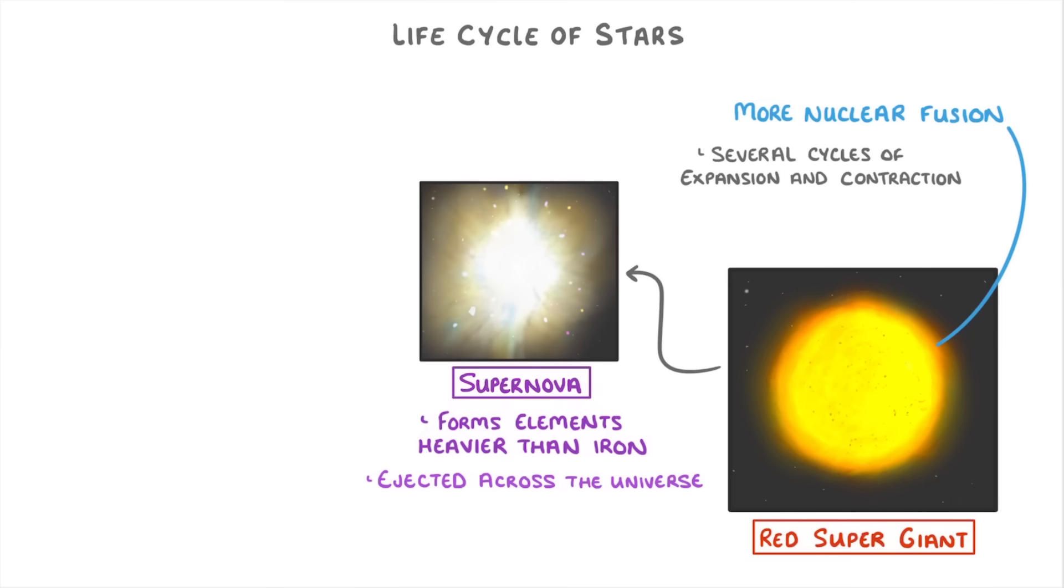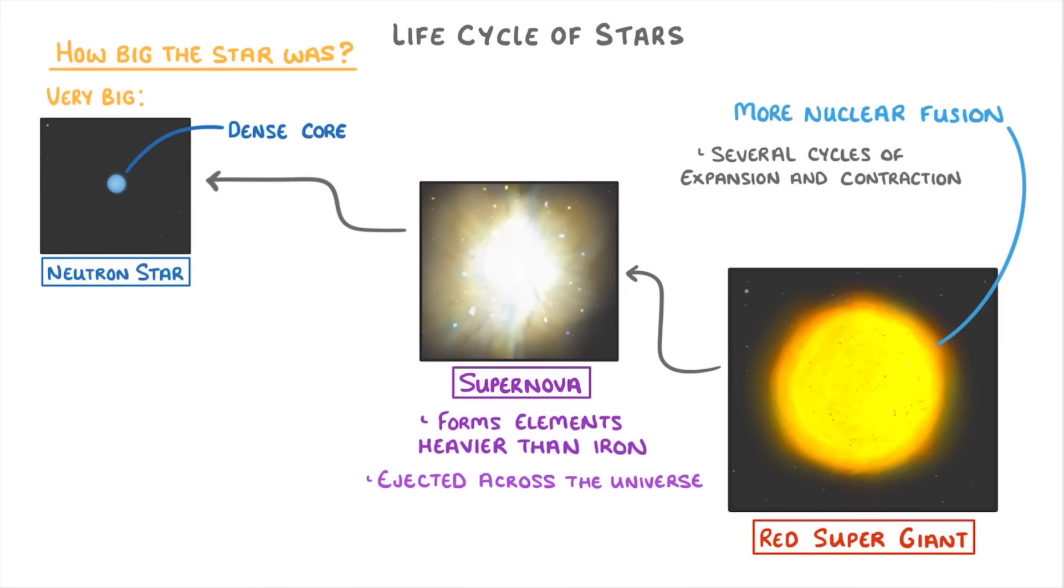What happens next, again, depends on how big the star was. If it was just very big, then it will condense into a very dense core called a neutron star.